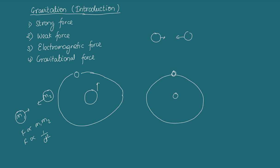Newton's formula for gravitational force is F = Gm1m2 / d², where G is the universal gravitational constant.